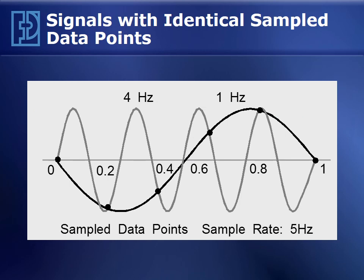Here's an example of a 1 Hz waveform and a 4 Hz waveform, sampled at a rate of 5 Hz. These two sinusoids have the same sample data record. We would say that the 4 Hz waveform is an alias of 1 Hz, assuming 1 Hz is what we're trying to measure.